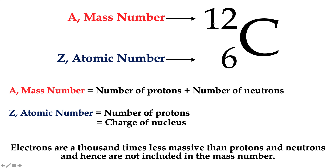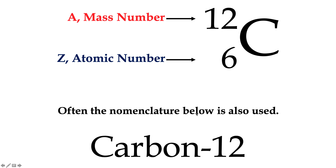For isotope nomenclature, the top number in the symbol is the mass number — the number of protons plus neutrons. We neglect electrons because their mass is about a thousand times less than a proton or neutron. The bottom number is the atomic number, which is the number of protons and also the charge of the nucleus. We can symbolize an isotope with this notation, or write the element name followed by the mass number. For example, carbon-12 means six protons and six neutrons.